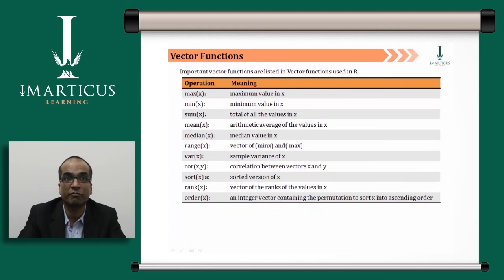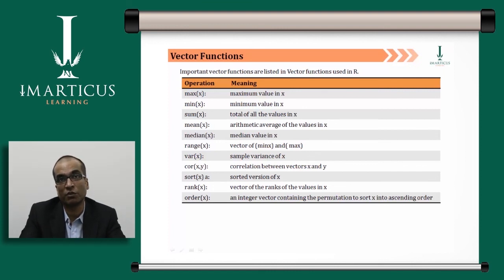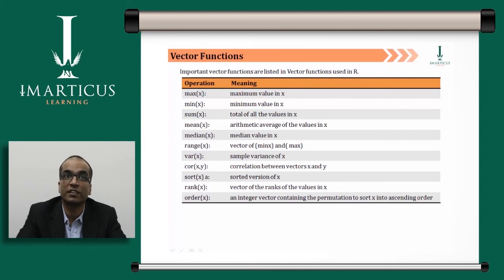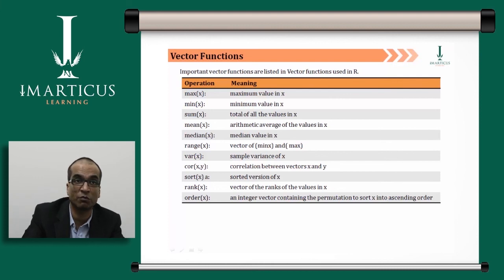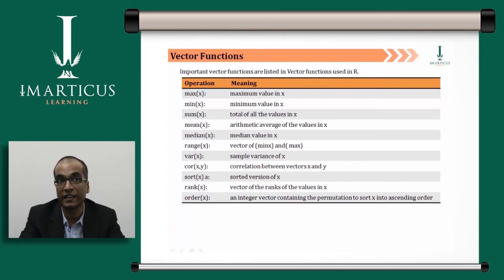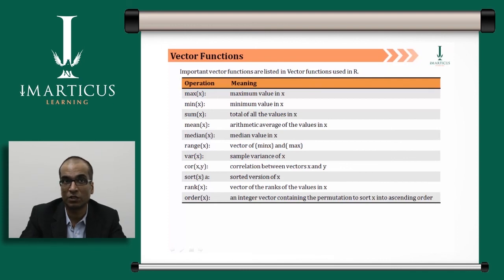Important vector functions include: max(x) returns the maximum value; min(x) returns the minimum value; sum(x) adds all elements in a numerical vector; mean(x) returns the average — for example, mean(A) where A = {1,2,3,4,5} computes to 3; median(x) computes the median; range(x) gives the min and max values; var(x) computes the variance.